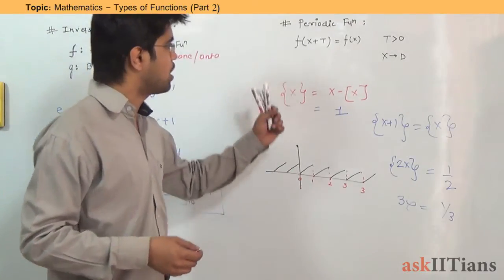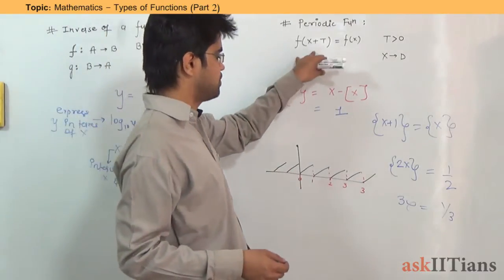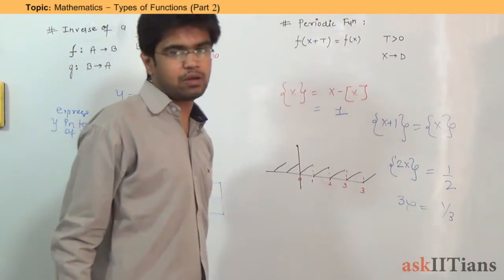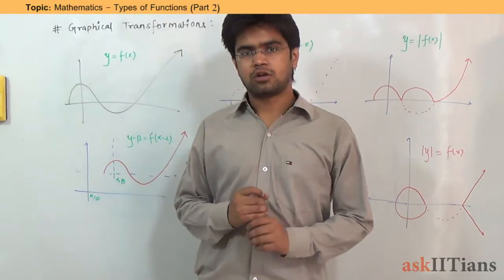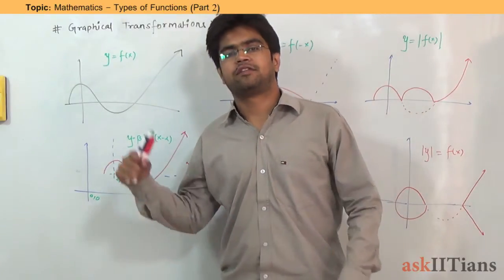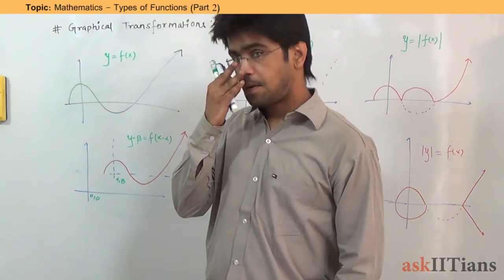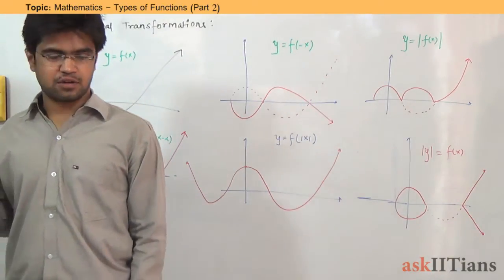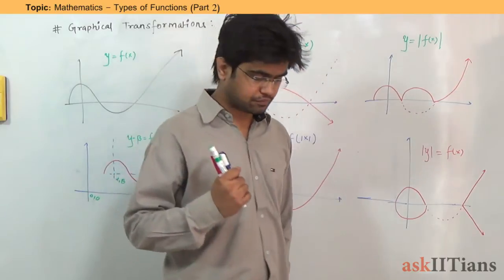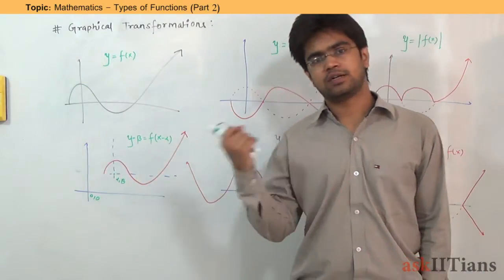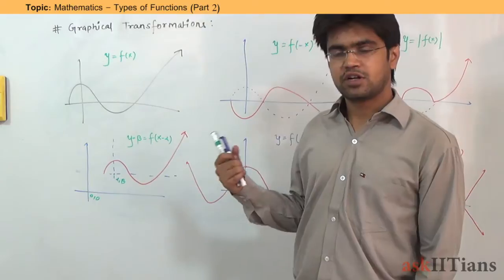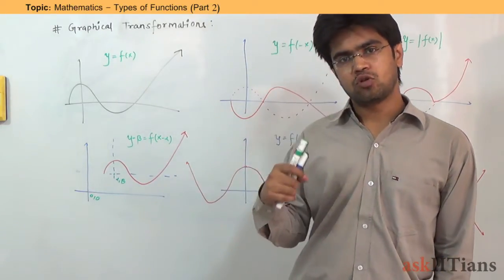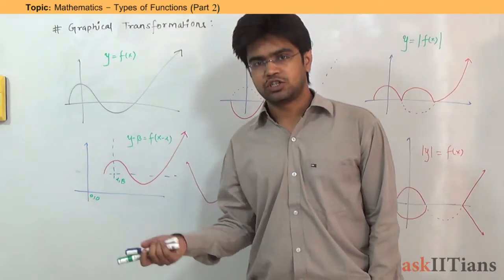This is how to find periodic functions — express it in the required form and identify T. Now the last topic of this part is graphical transformations. There are various operations that can be performed on a graph or on a function, and depending upon those operations, the graph will change. Let's see how.